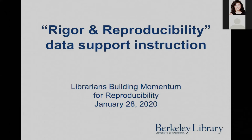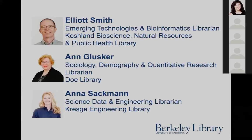We'll be talking today about developing and delivering a data support module for a course in experimental rigor and reproducibility that is part of the UC Berkeley curriculum in the Responsible Conduct of Research, or RCR. I'm Elliot Smith, the Emerging Technologies and Bioinformatics Librarian at UC Berkeley.